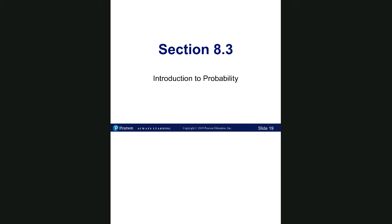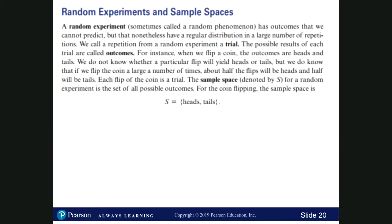We're going to start with Example 1, but before we get to that example, we're going to talk about what is a random experiment, sometimes called a random phenomenon. A random experiment has outcomes that we cannot predict, but nonetheless have a regular distribution in a large number of repetitions. We call a repetition from a random experiment a trial. This could be as simple as tossing a coin.